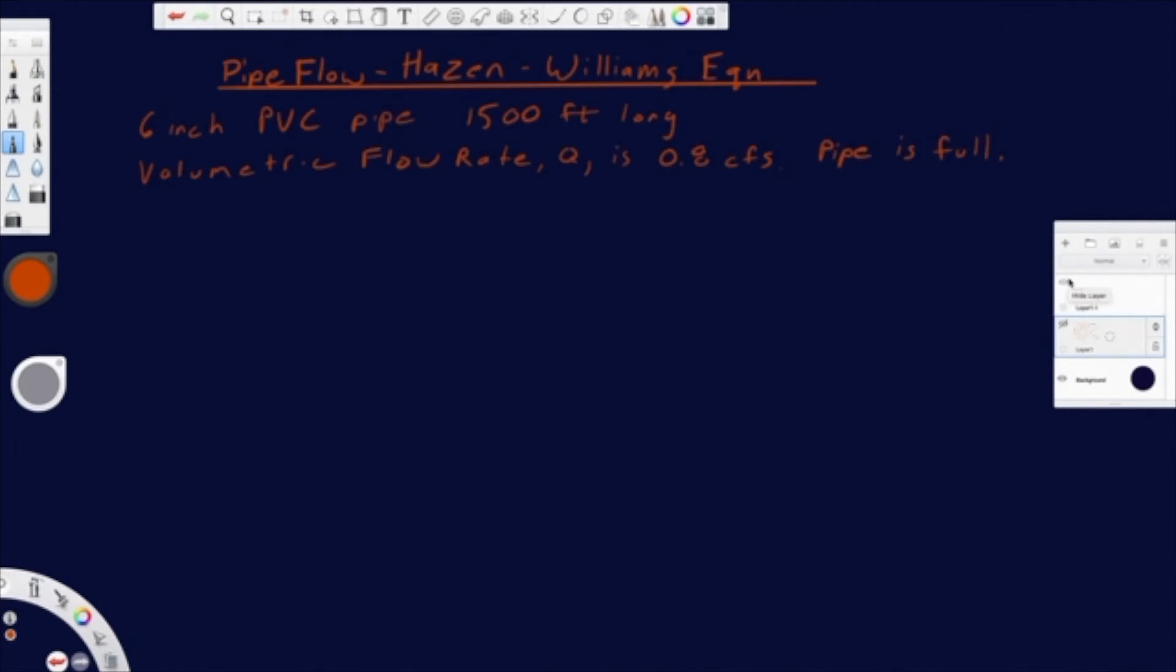And so we've got a little problem set up for you guys here. In this case, we have a 6-inch PVC pipe. It is 1,500 foot long. It has a volumetric flow rate of 0.8 cubic feet per second, and the pipe is flowing full. Now, I'll go ahead and say, C for PVC, in this case, in general, is going to be 150. That's what I'm going to use.